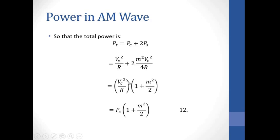After factoring out Vc² over R, the carrier part becomes 1 and the sideband part becomes M squared over 2. This part is equivalent to Pc, so we substitute to remove the R component. The final formula is: Pt equals Pc times (1 plus M² over 2). Your syllabus requires you to be able to derive this formula.